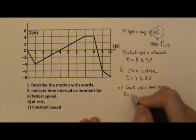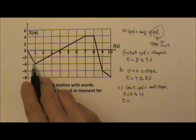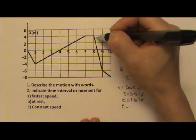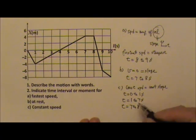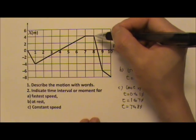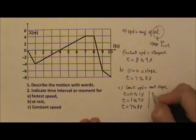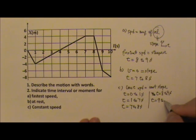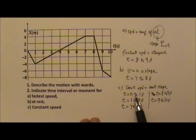The constant speed intervals are: between t equals 0 and 1, between t equals 1 and 7, between t equals 7 and 8 — where the constant speed is 0 — then t equals 8 to 9 seconds, and t equals 9 to 10 seconds. Within each time interval the speed is constant, but between intervals the speed is different. Each segment has its own constant speed.